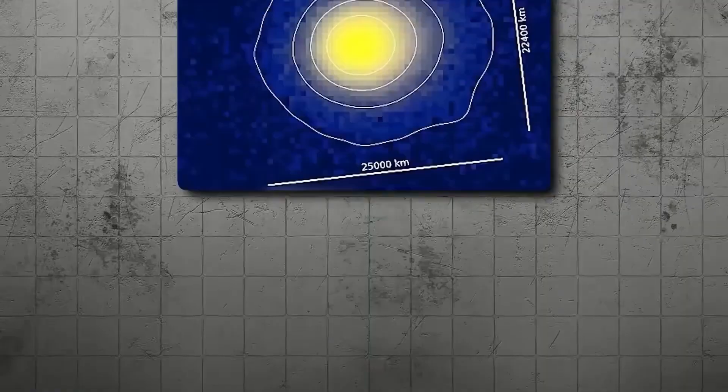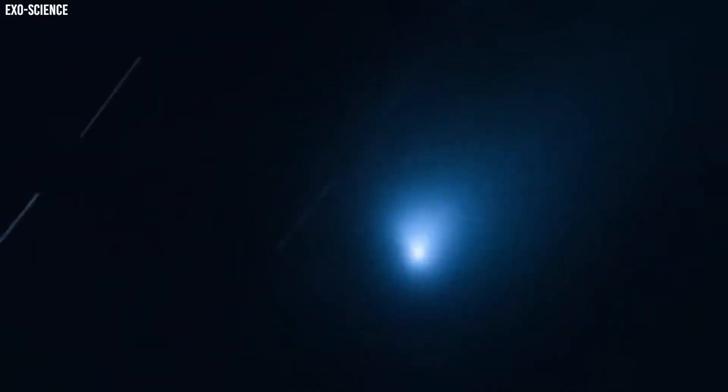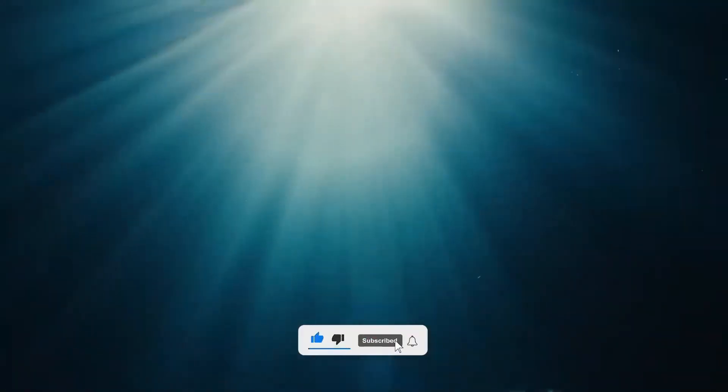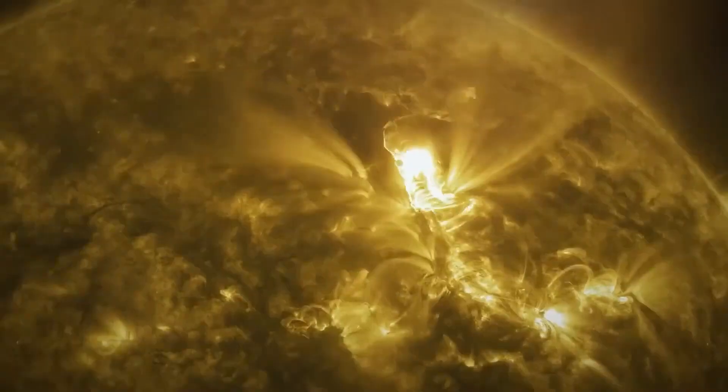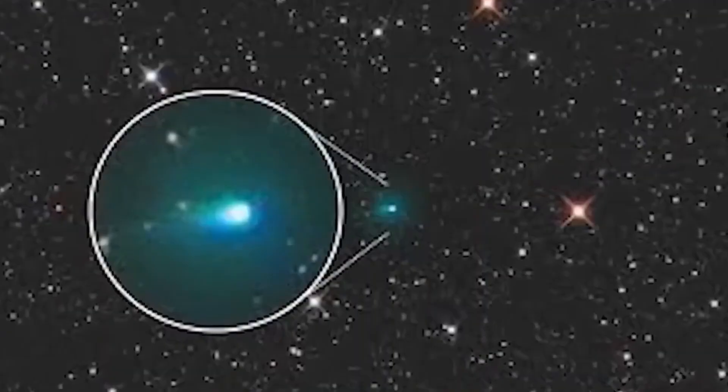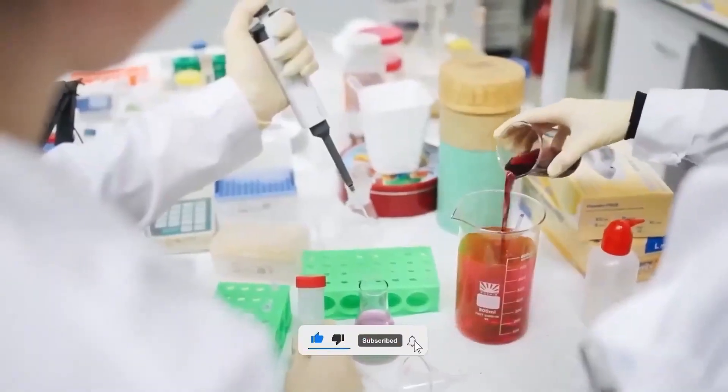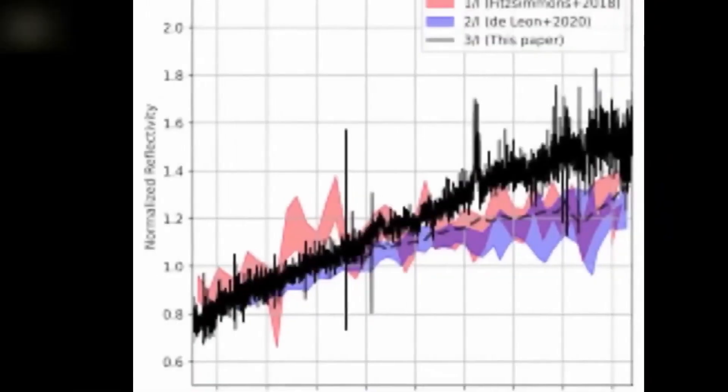According to Loeb, 3i/Atlas reached perihelion, the closest point to the sun in its orbit, on October 29, 2025. Perihelion is when any hidden mechanism, natural or otherwise, would be maximally activated, given the intense solar radiation. He linked this to the Oberth effect, where a spacecraft can gain disproportionate speed by firing engines deep within a gravity well. If Atlas were artificial, perihelion would have been the ideal time for it to accelerate or deploy smaller devices.